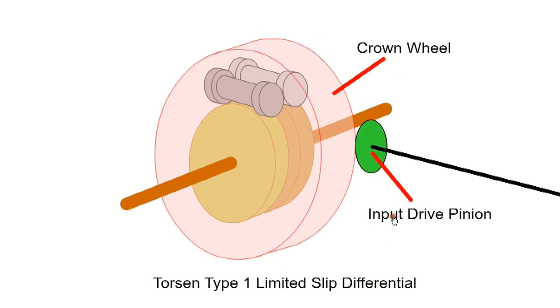During normal operation, the input drive pinion drives the crown wheel and cage. The torsen will allow for speed difference when cornering. However, if one wheel loses traction, the difference in torque causes the differential to bind together and limit the slip.